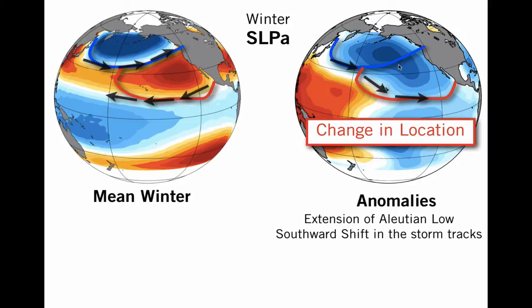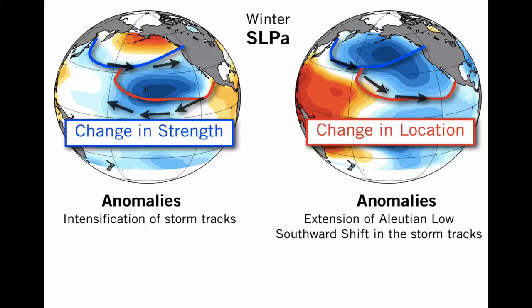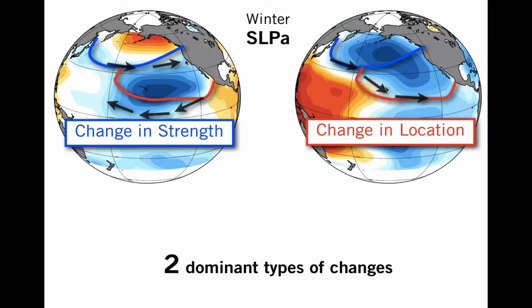The other atmospheric variability is a change in strength, which is represented here, and is typically associated with a dipolar structure in the sea level pressure anomaly, which emerges as the second dominant mode of atmospheric variability. This is typically associated with intensification of the storm tracks along the westerly trajectory. So these two dominant types of atmospheric variability — change in location and change in strength — have an oceanic footprint.